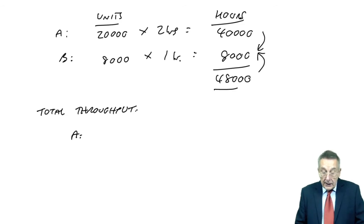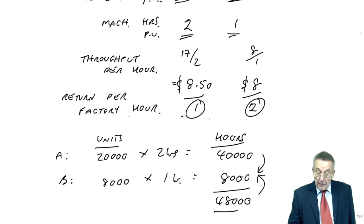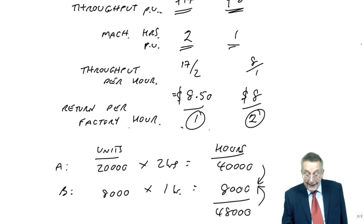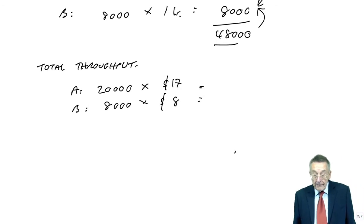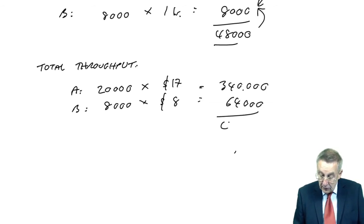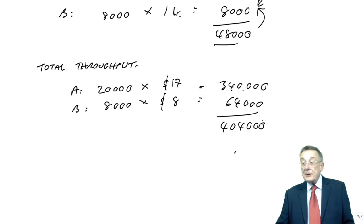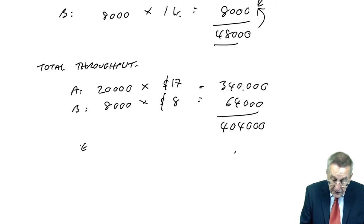Total throughput — effectively total contribution. So it's 20,000 A's and 8,000 B's. The throughput contribution per unit of A was $17, and of B was $8. That gives totals of $340,000 from A and $64,000 from B, so a total throughput of $404,000. Subtract the fixed costs to get the profit.